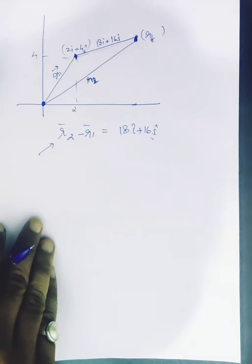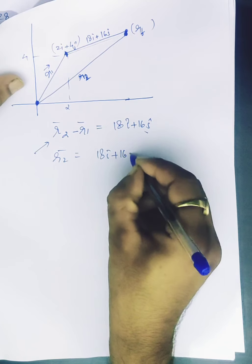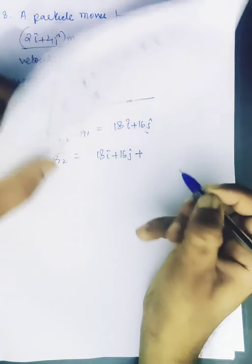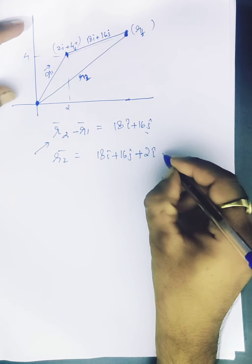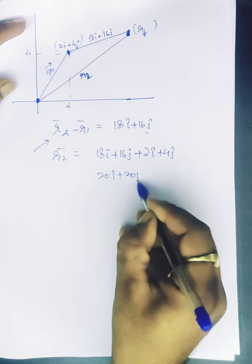So we already know what r1 is. 18i plus 16j plus r1 that is 2i plus 4j so we get 20i plus 20j.